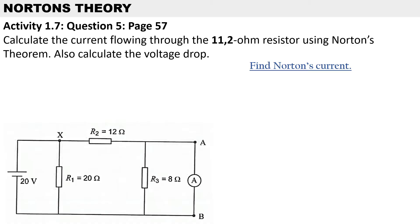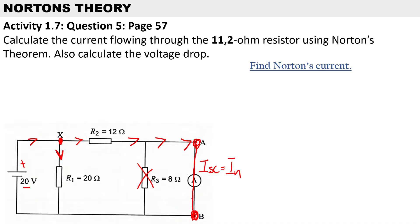The first step is to calculate Norton's current. When we calculate Norton's current we short circuit the load resistor, so therefore this current is known as the short circuit current. Now, looking at the battery source — conventional current flows from positive to negative. The current will split up at junction X and pass through R1 and R2. When the current reaches this area it will not pass through the 8 ohm resistor, because the current will choose the path of least resistance.